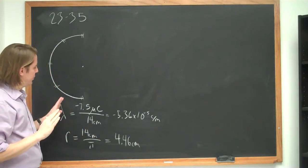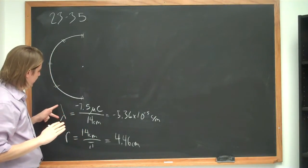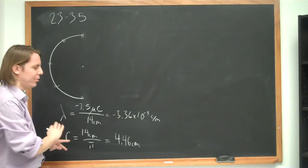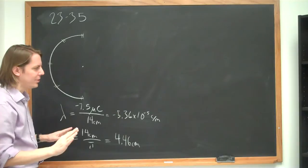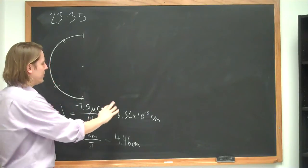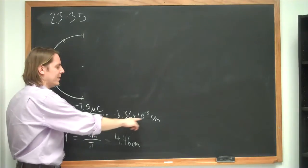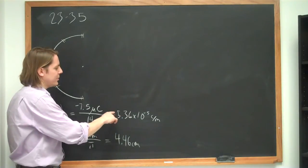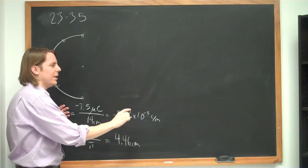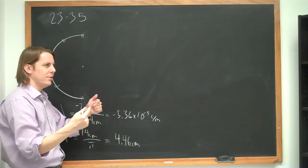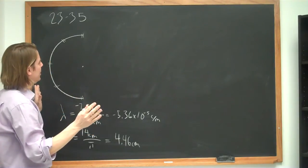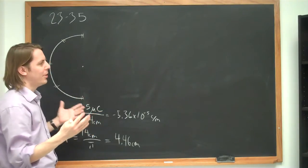I'm planning on leaving things in terms of lambda and r, and plugging them in at the end — that leads to fewer numerical errors. Since I'm doing that, I'll ignore the fact that the charge is negative for now. When I plug in lambda at the end, I'll plug in the negative number, and that will take care of the field direction. Right now I'll just assume some positive lambda.